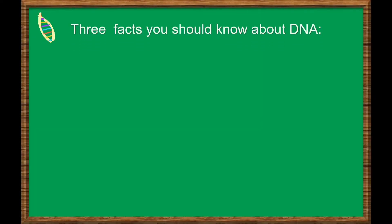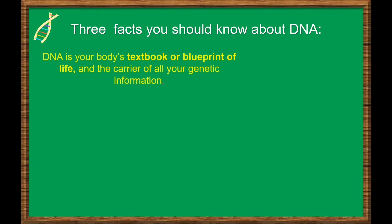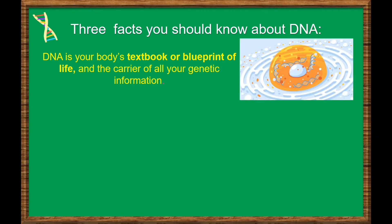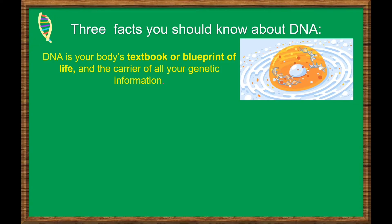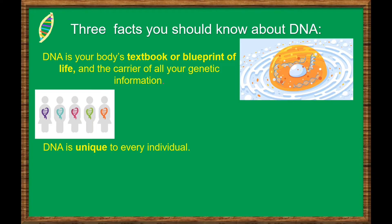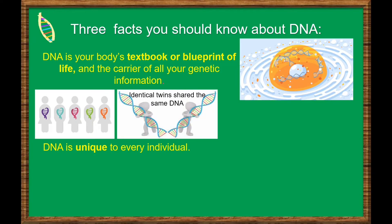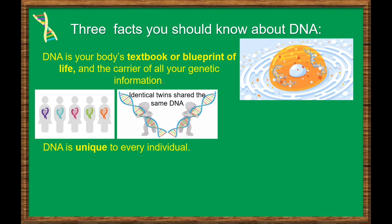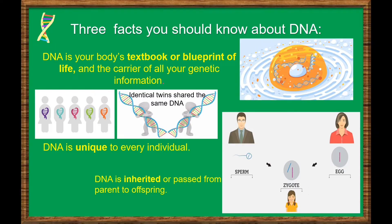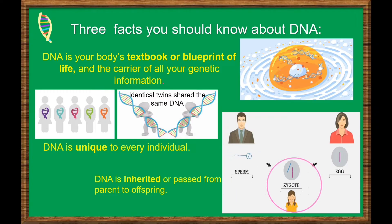There are three facts you should know about DNA. First, DNA is your body's textbook or blueprint of life and the carrier of all your genetic information — it tells you how to be who you are and tells your cells to do the tasks they need to do. Second, DNA is unique to every individual, except for identical twins, since they came from the same fertilized egg, which causes them to carry the same DNA. Any differences between identical twins can thus be attributed to environmental factors. Third, DNA is inherited or passed from parent to offspring. You receive one copy of DNA from your mother and one copy from your father in the form of chromosomes.